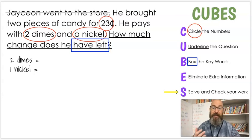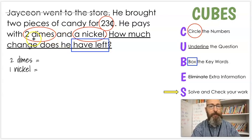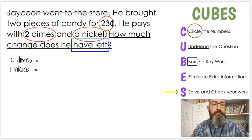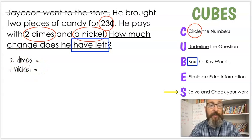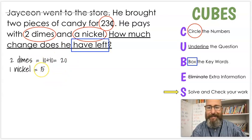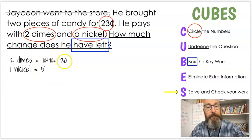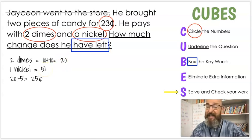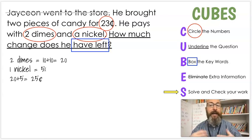E is eliminate extra information. Is there any information in here that doesn't help us solve the question? Because we want to get rid of that so it doesn't distract us. Jayceon went to the store. That doesn't help us solve the question. We want to take that out. And our last step is S. Let's solve and check our work. So the first thing we need to do before we can solve and check our work, we circled two things up here that are worth numbers, but we don't know what those numbers are yet.